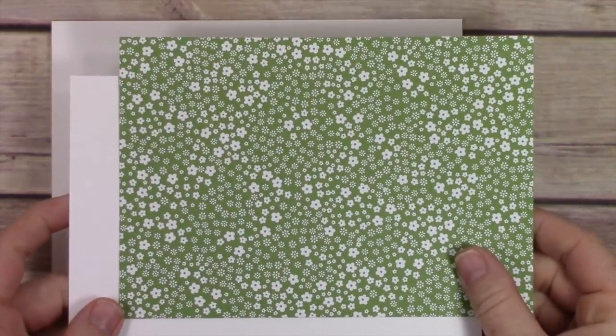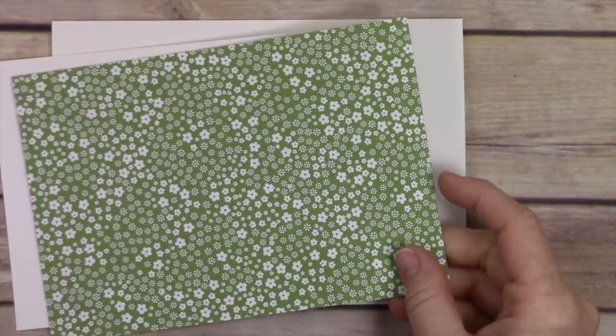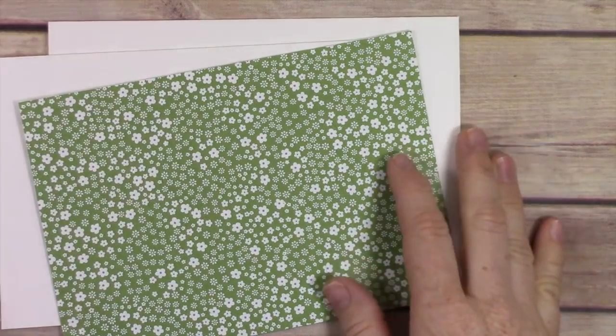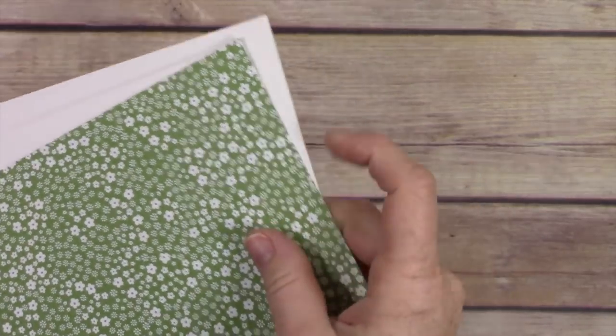Then I have a piece of Wild Wasabi designer series paper from the Subtles collection cut at four and three-quarters by six and three-quarters, and a piece of Whisper White cardstock cut at that same size to layer behind.